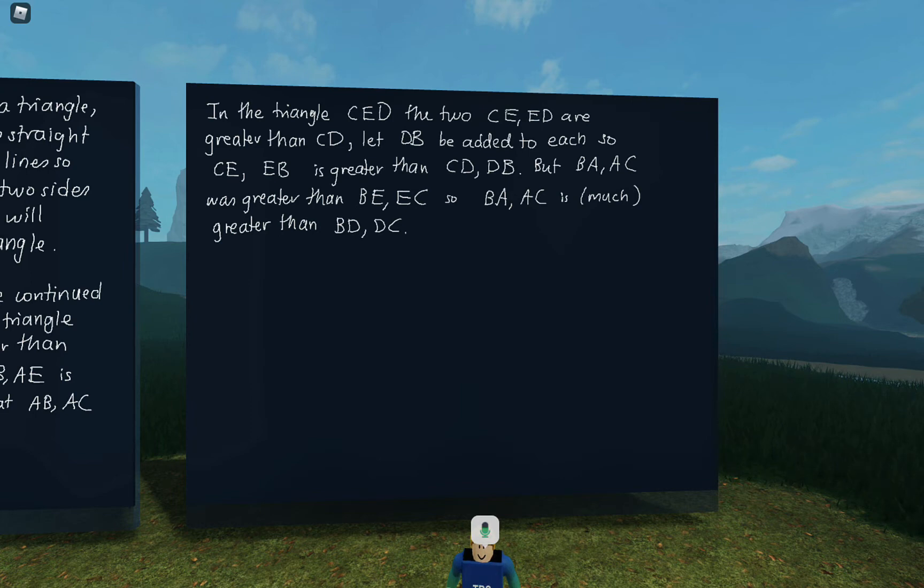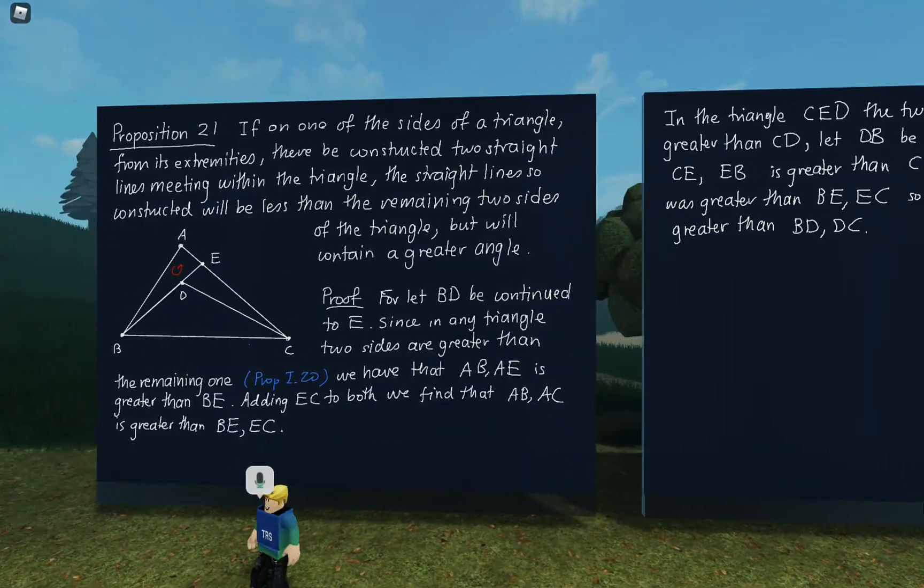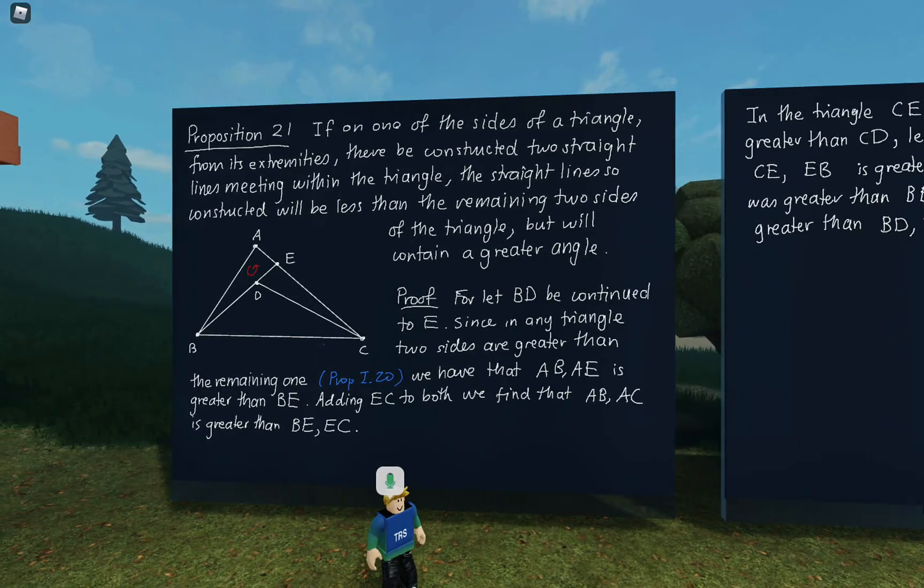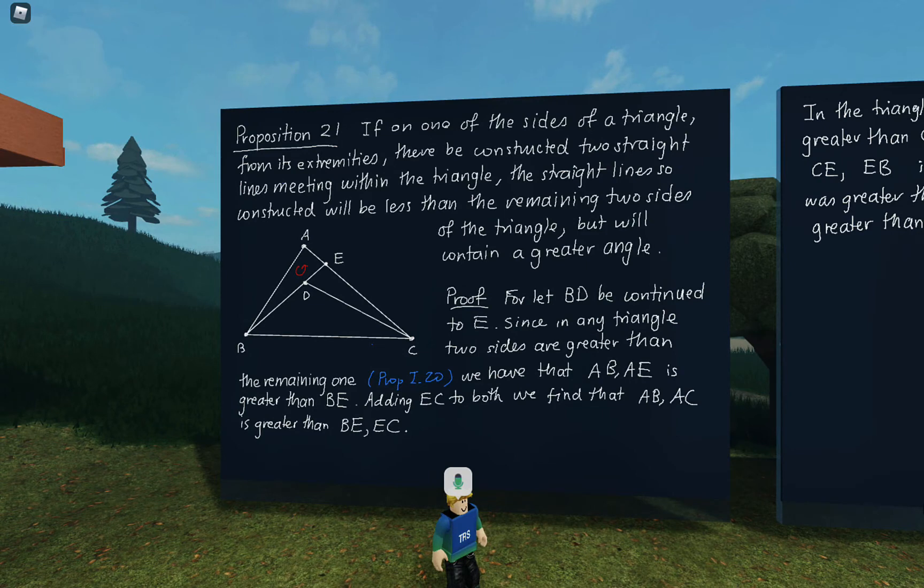So that's what we wanted to show, right? So we've now shown that BA, AC is greater than BD, DC, which was the first assertion. Now it just remains to make the argument about the angles.